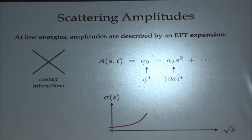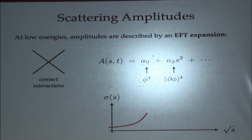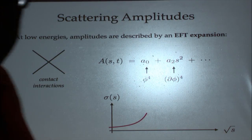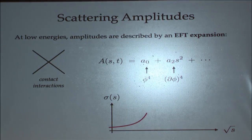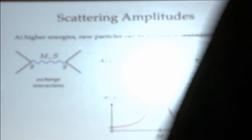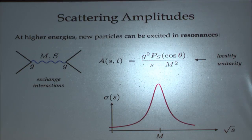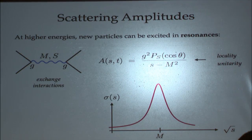Just to put this into perspective, let me remind you very quickly about standard textbook material about scattering amplitudes. At low energies, we can describe amplitudes as an analytic expansion in the Mandelstam variables S and T, which corresponds to the EFT expansion of the theory where everything is described by local contact interactions. But if we go to higher energies, it's possible that these amplitudes have poles when the energy matches the mass of new particles in the theory. You can have simple poles, and the fact that these are simple poles and not higher-order poles is dictated by locality.